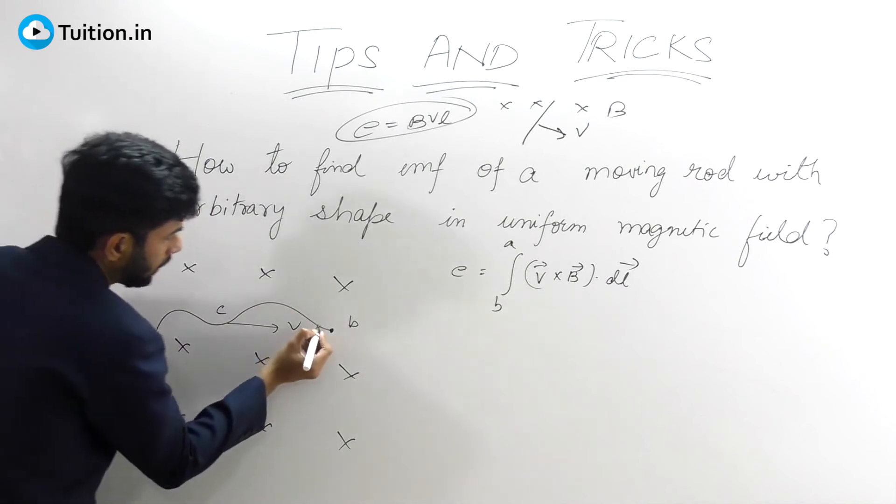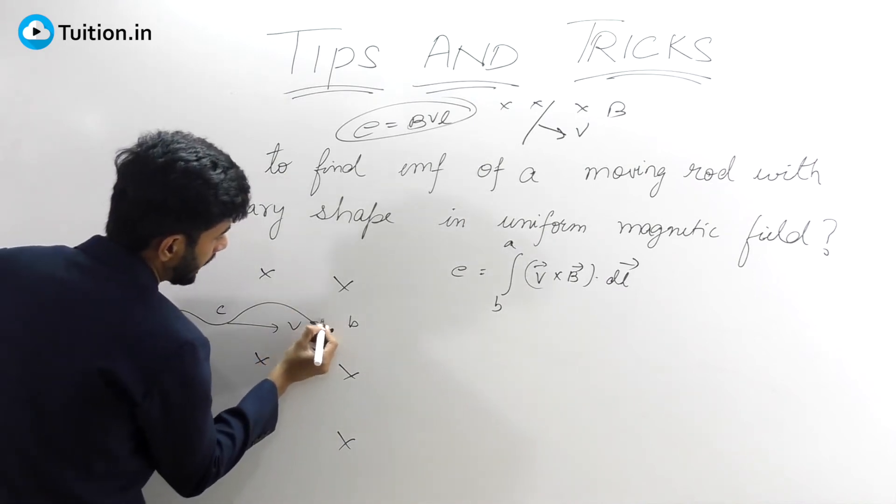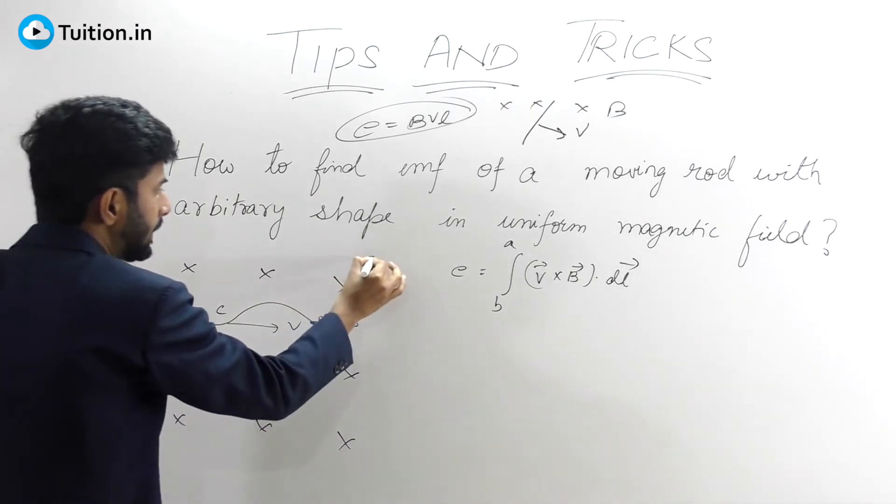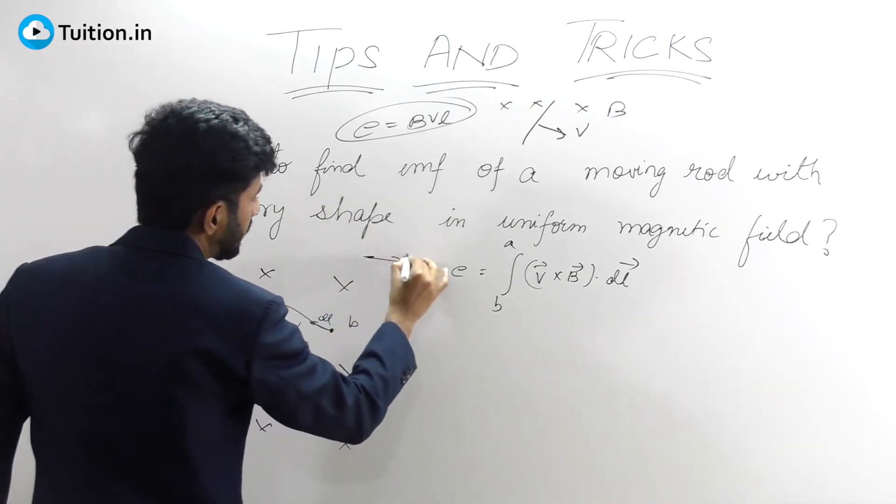So what you will do is take some length DL in this particular direction. DL is a very small rod moving with some velocity v.